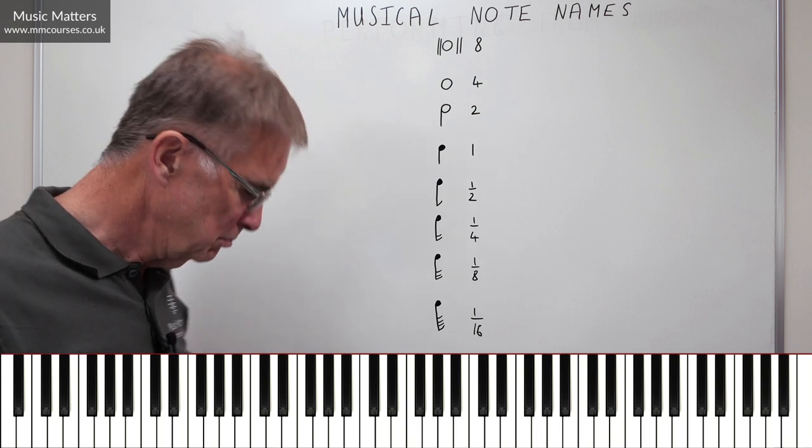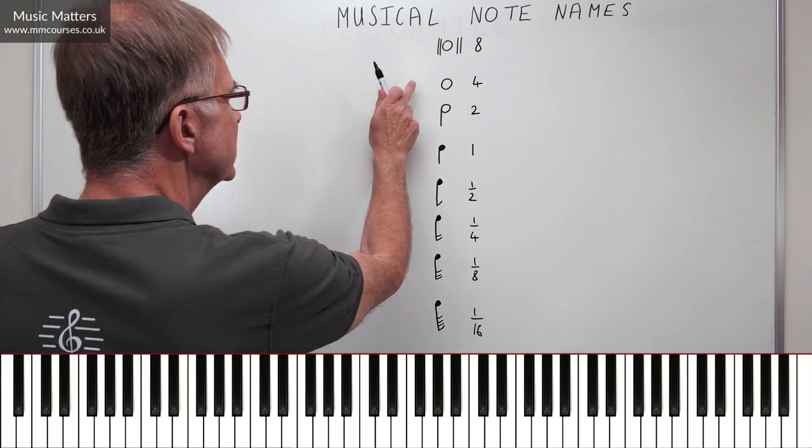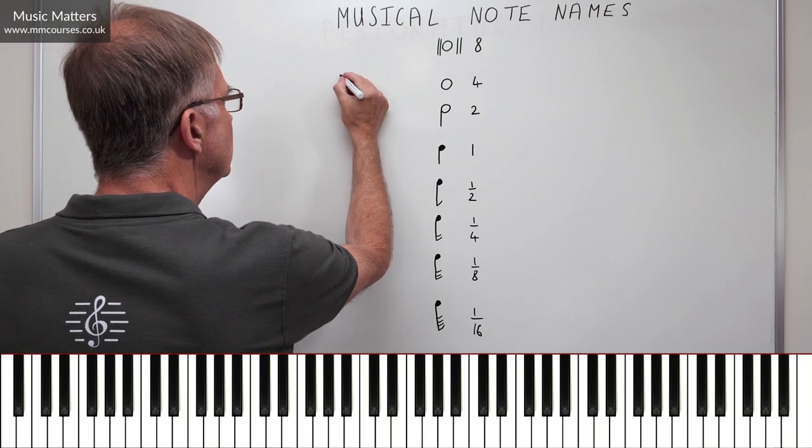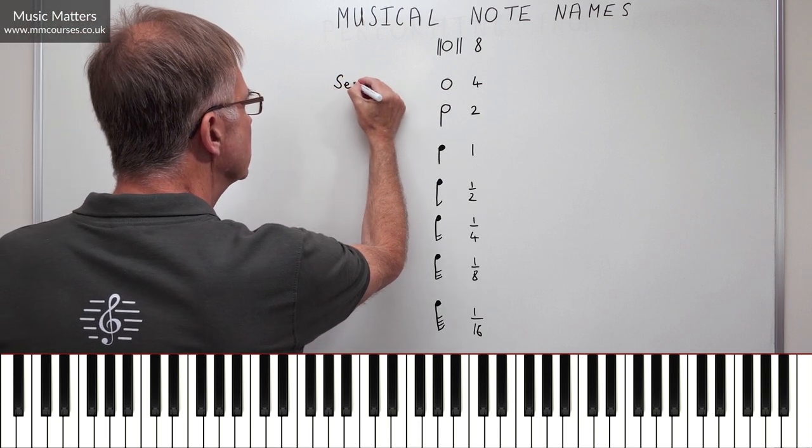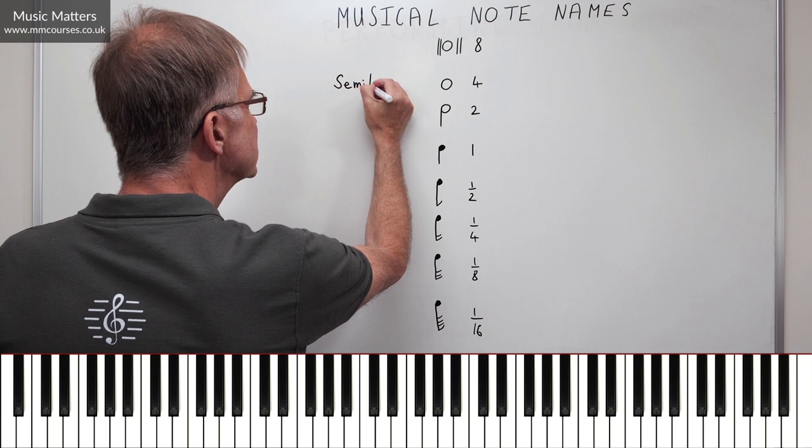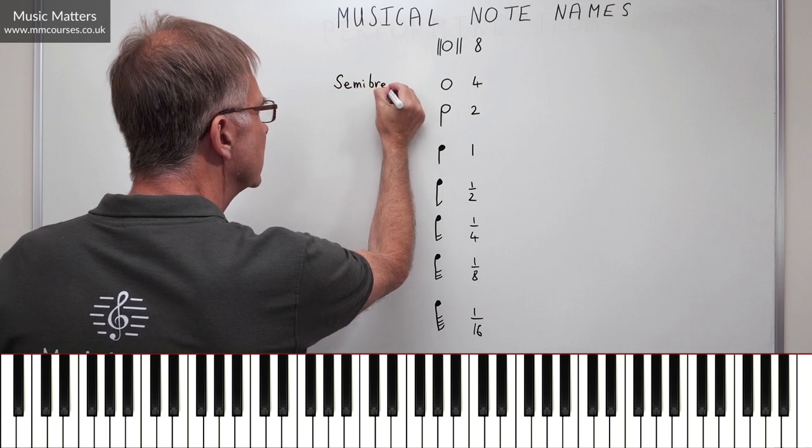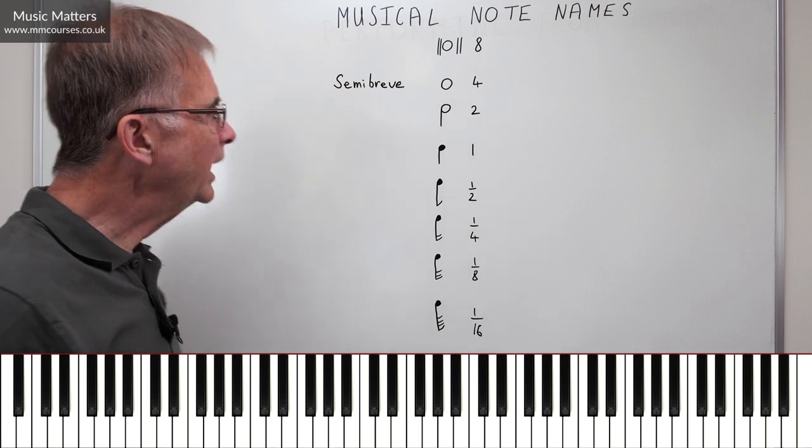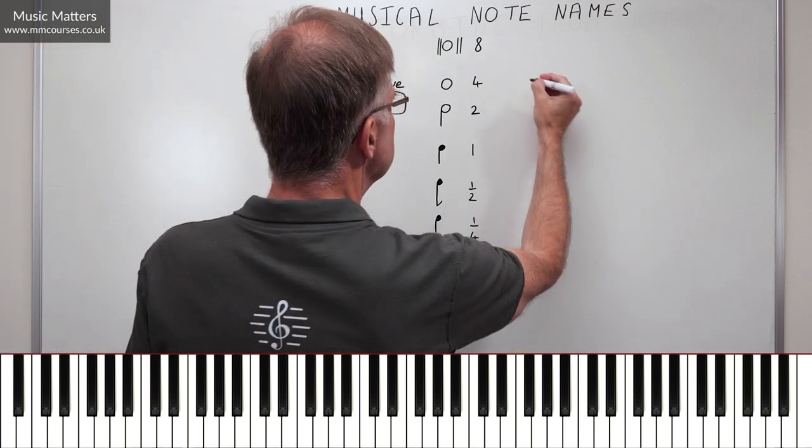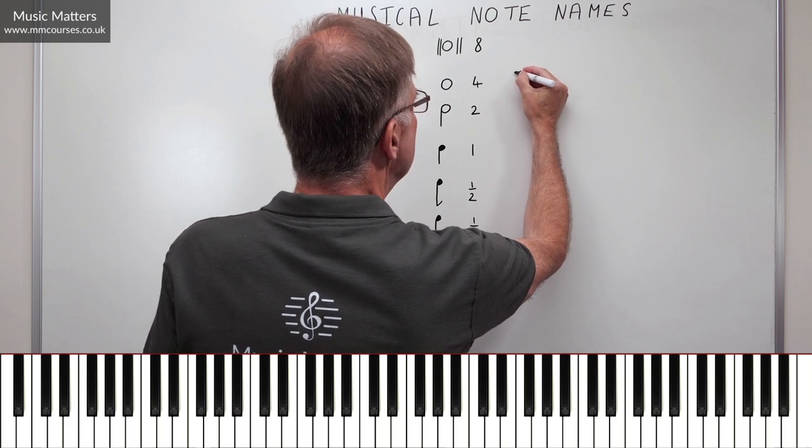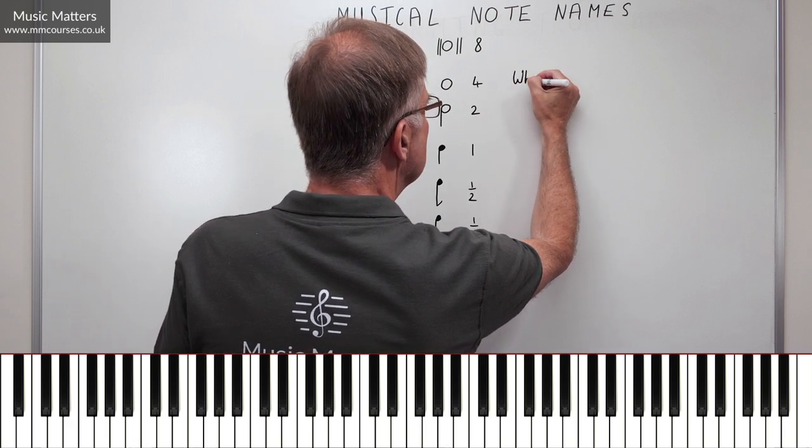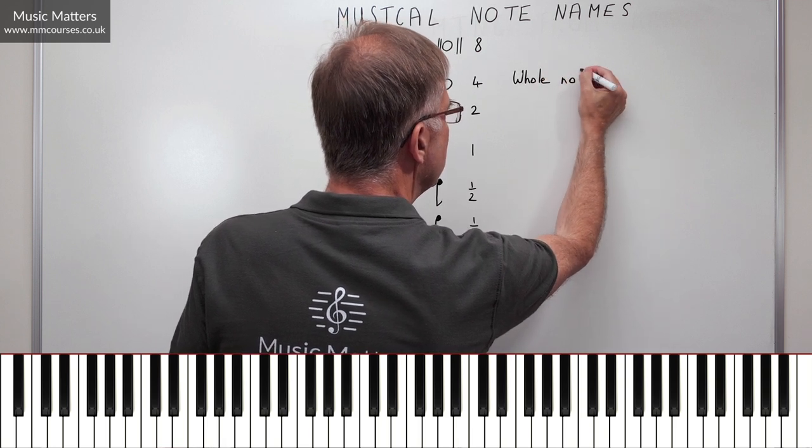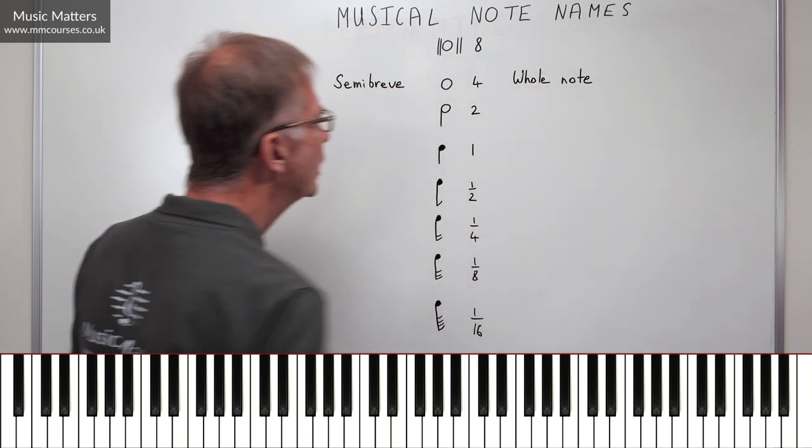If you live in my part of the world, we're going to start here. I'll come back to this one. We'll start here. Well, this thing with four beats we call a semibreve. If you come from the US or some other part of the world using the US system, you will know this as a whole note. So how about that? A whole note.